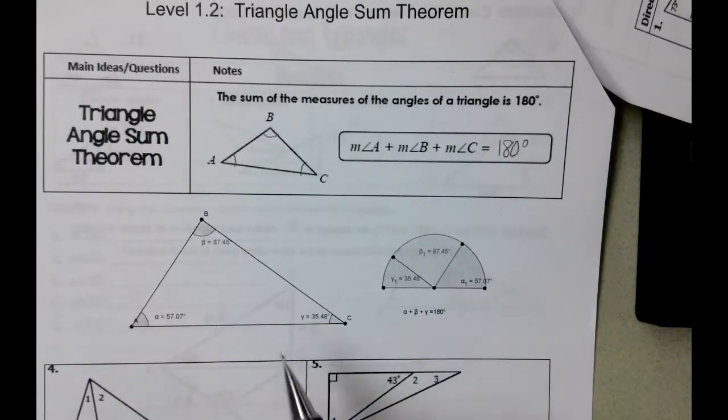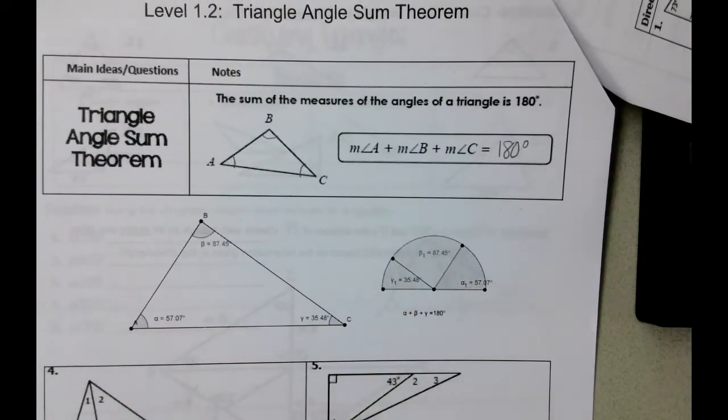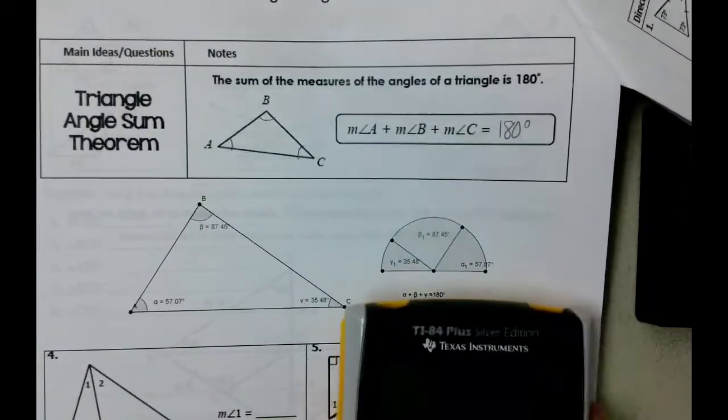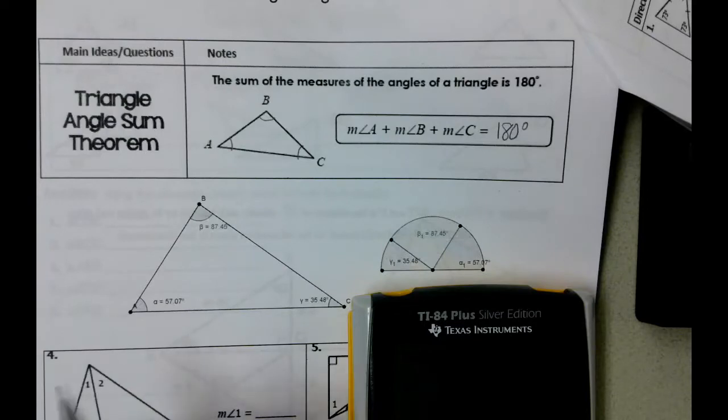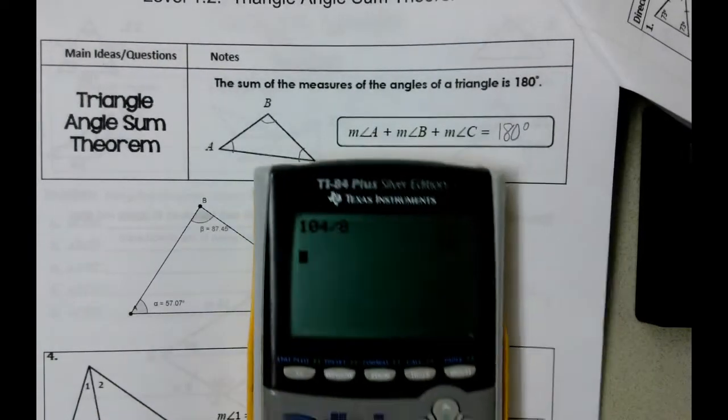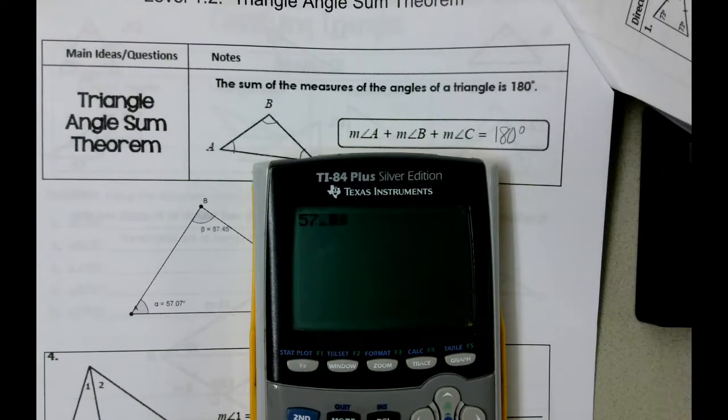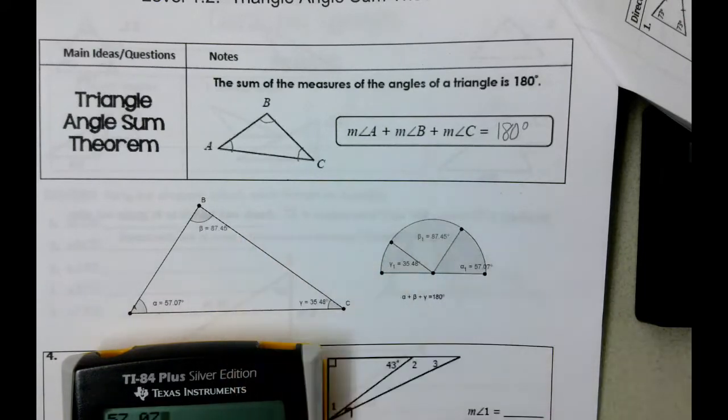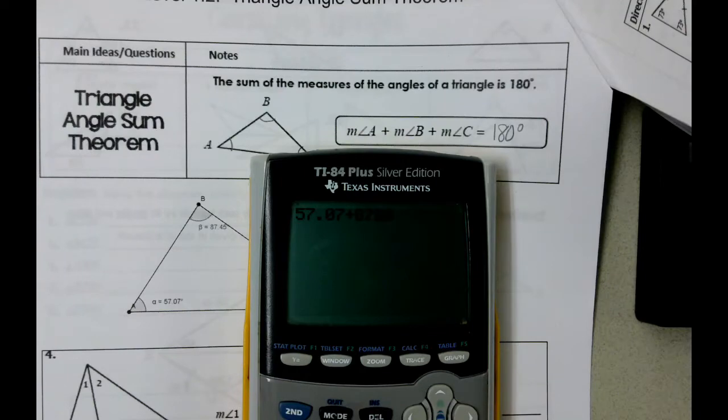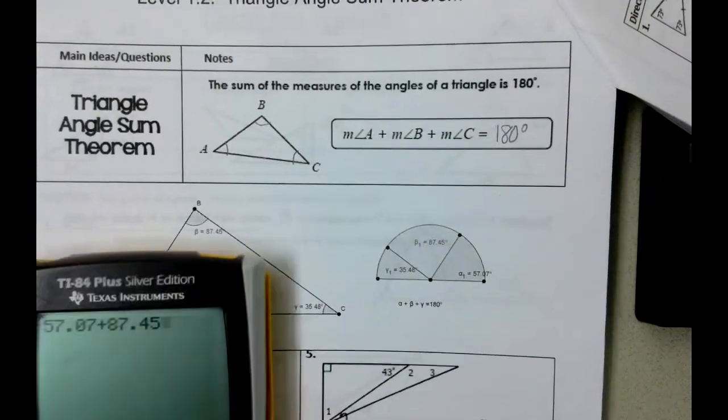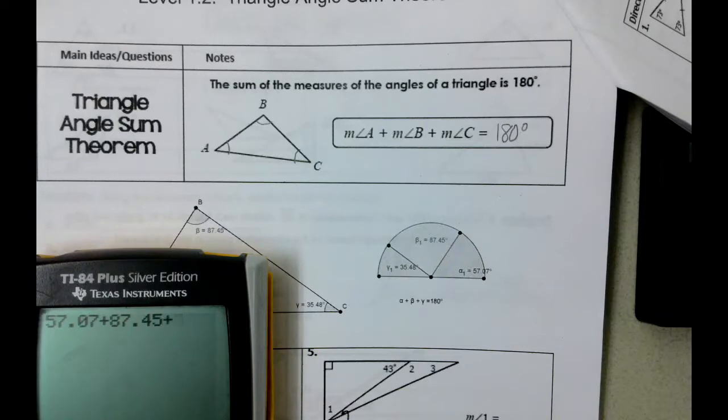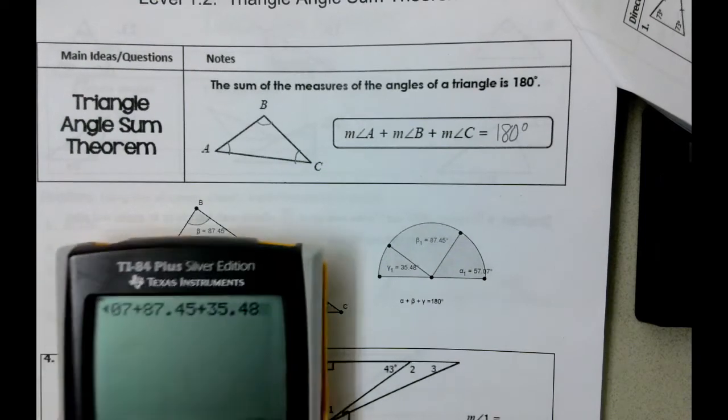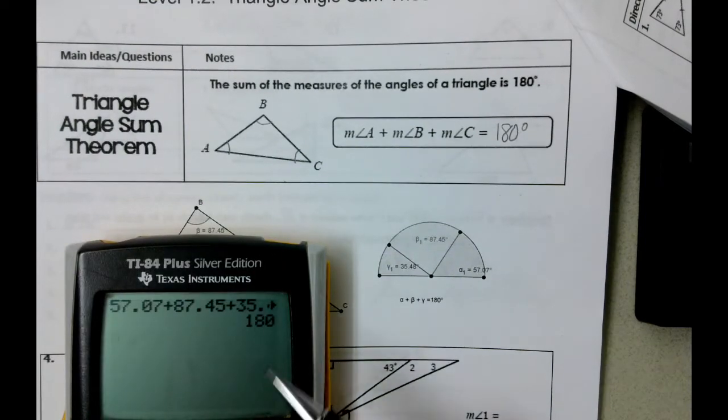If you take a look down here, right underneath the box, we've got a picture of a triangle. What we see is that the measure of angle A is 57.07 degrees, the measure of angle B is 87.45 degrees, and the measure of angle C is 35.48 degrees. And if we add all three of those together, we get 180 degrees.